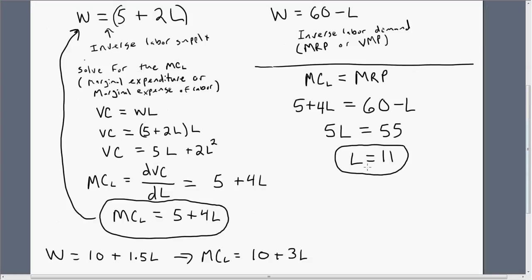To get the wage, what is the wage that the monopsonist is going to pay its workers? We're going to take this result and plug it back into the inverse labor supply equation. So the monopsonist wage is going to be 5 plus 2 times 11, or $27. So that's how you solve a monopsony problem. I hope you found this video helpful.